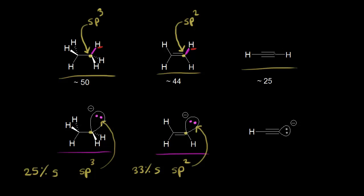Finally, we have acetylene. This carbon in acetylene is sp hybridized. If acetylene donates this proton, these electrons are left behind — the electrons in magenta occupy an sp hybrid orbital. An sp hybrid orbital is 50% s character.